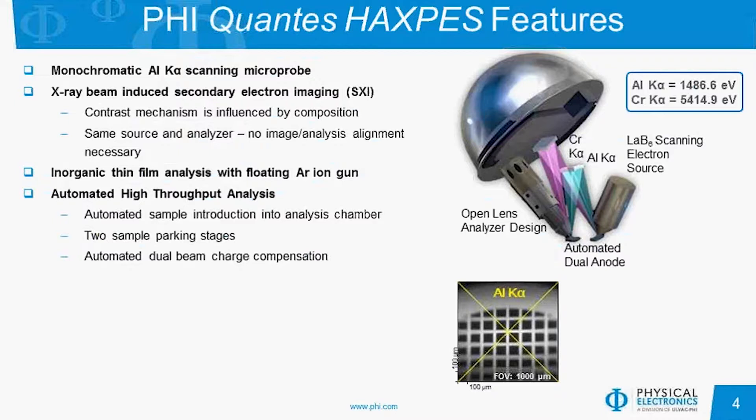Both the QUANTERRA 2 and the new QUANTES instrument use PHI's scanning microprobe technology, where a focused electron beam generates a focused X-ray beam. Using this scanning microprobe, we are able to generate X-ray-induced secondary electron images, also called SXIs. For example, I have shown an SXI of a copper TEM grid taken with the aluminum K-alpha source. These images are generated with the same X-ray source and analyzer used during XPS data acquisition, so no additional image and analysis position alignment is needed. The contrast mechanism in an SXI is mainly dependent on photoelectron yield, meaning different chemical environments, making SXIs useful for finding defects or verifying sample uniformity.